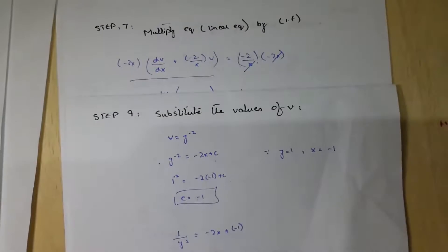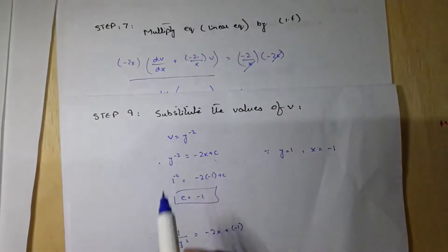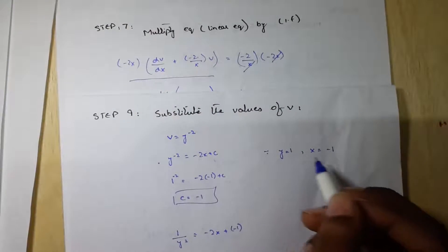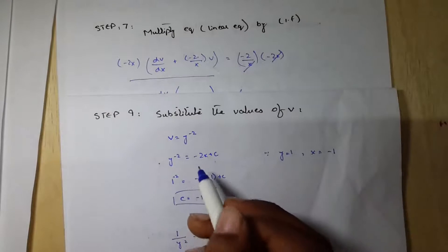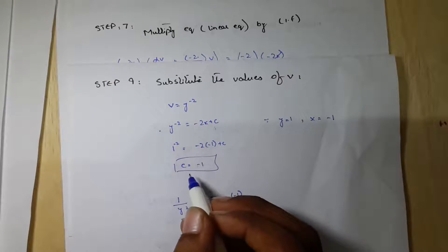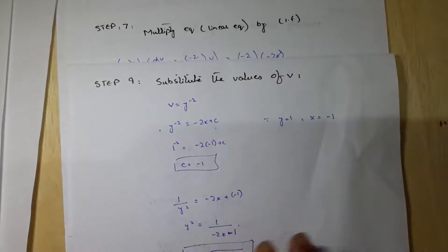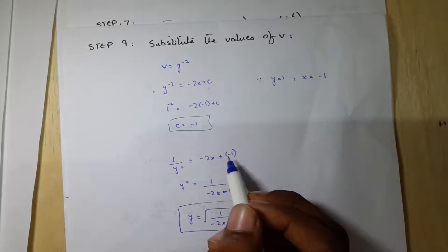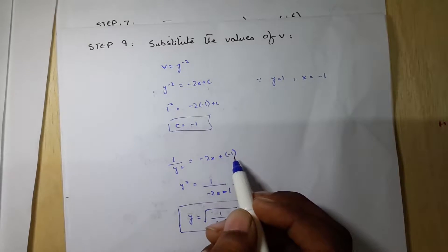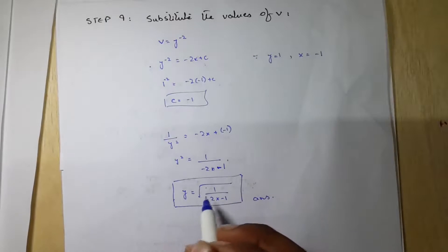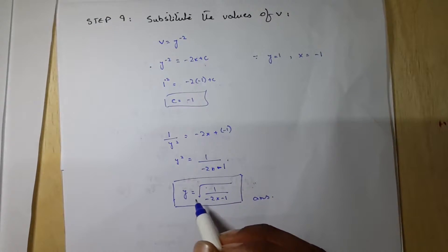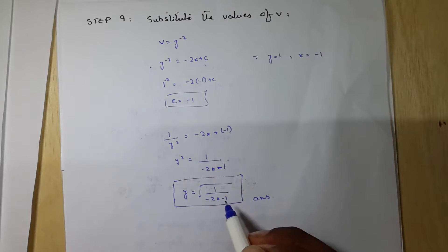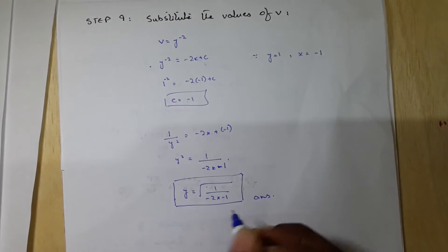Step 9: substitute the value of v. Since v equals y^(−2), and we know that y equals 1 and x equals minus 1, solving gives c equals minus 1. Therefore 1/y² equals minus 2x plus c; substituting c equals minus 1 gives the final answer: y equals 1 divided by the square root of (minus 2x minus 1).